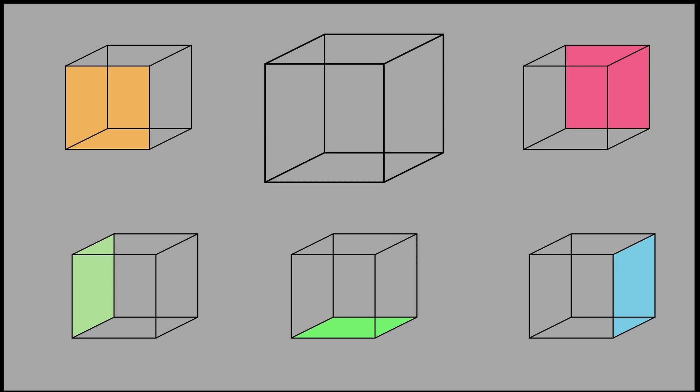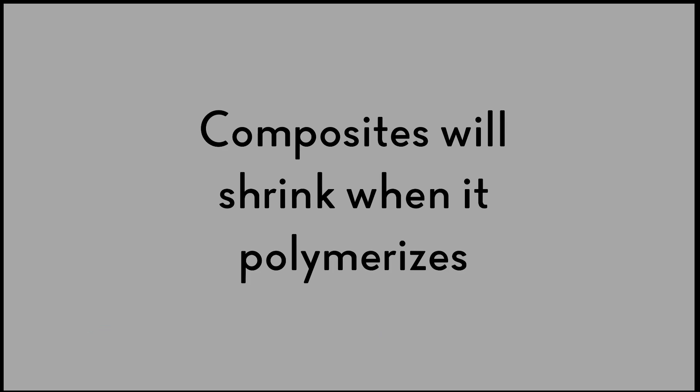One fact we have to understand is that all dental composite materials when polymerized will shrink. When we take dental composite, place it inside the cavity preparation, and light cure it, the size of it will decrease, leading to a gap formation between the tooth and the restoration. In this example, the cube is filled with dental composite. Once the composite is light cured, there will be a gap formation between the glass walls and the composite because the composite is shrinking and gets detached from the walls.